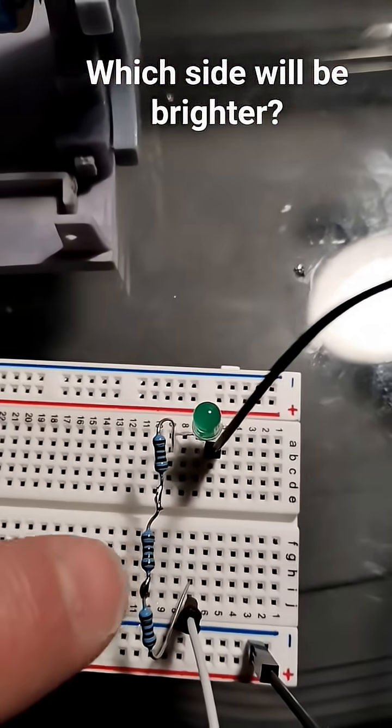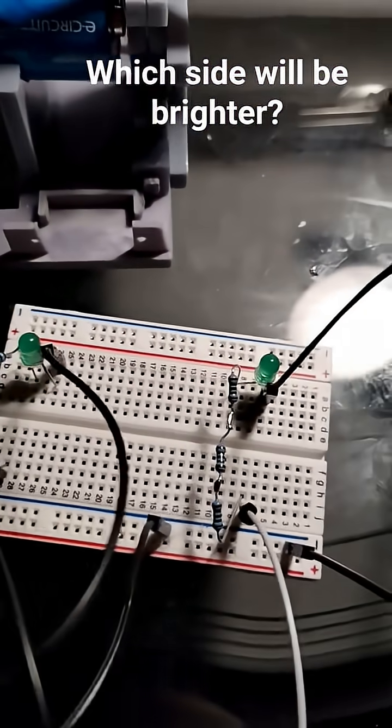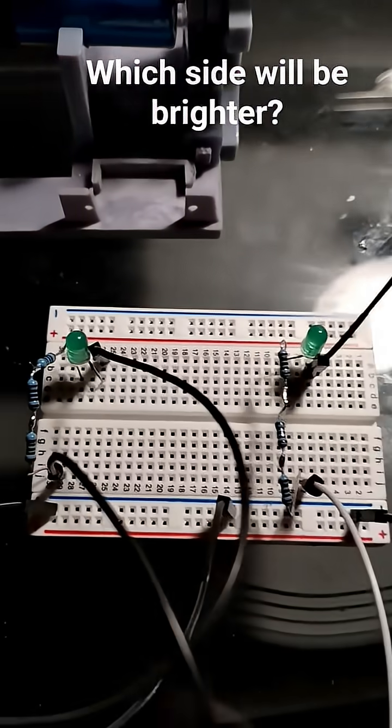The side on the right has three resistors, each are 1,000 ohms soldered together. Which side is going to be brighter?